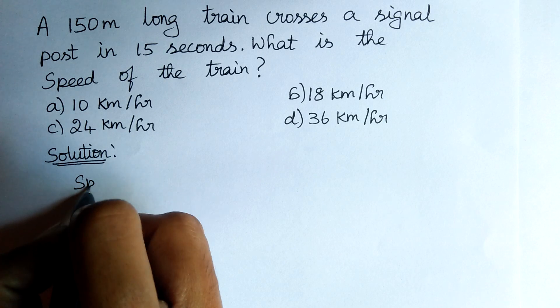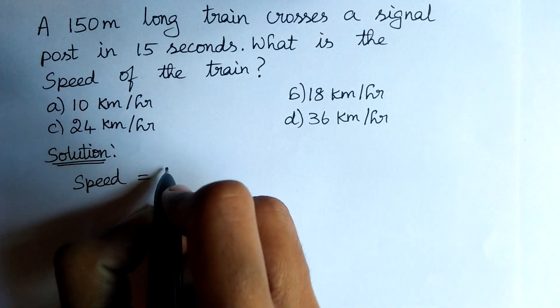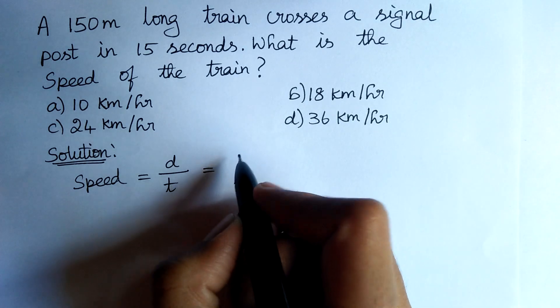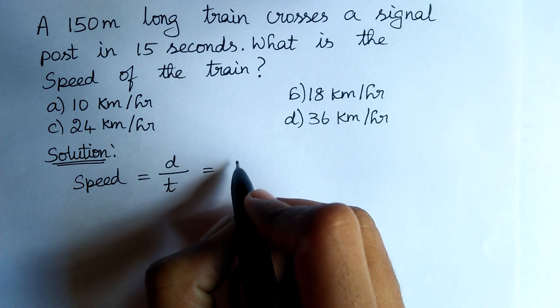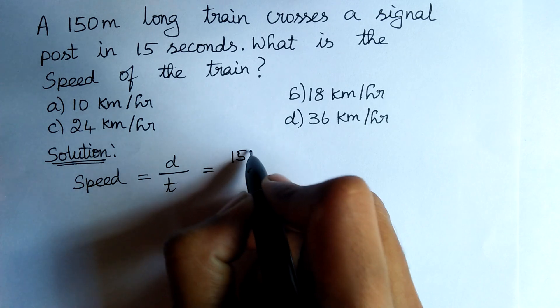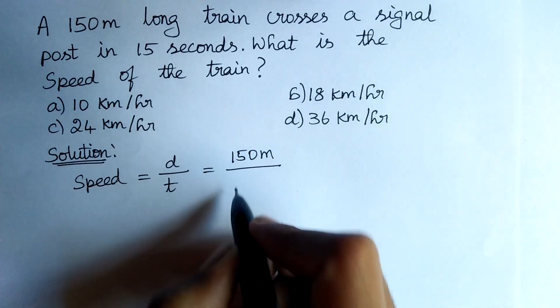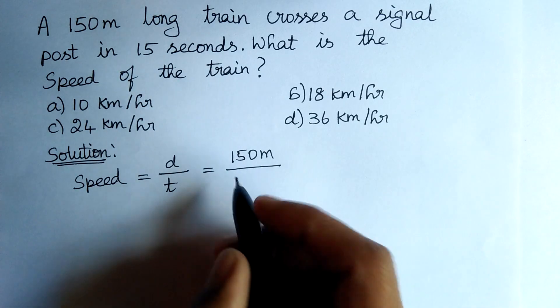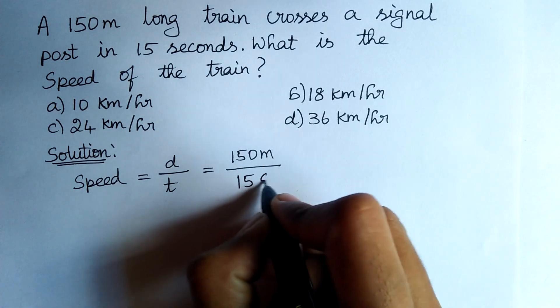We know the formula of speed. Speed is equal to distance by time. Here, the given distance is 150 meters divided by the given time. It crosses the post in 15 seconds. Therefore, 15 seconds.